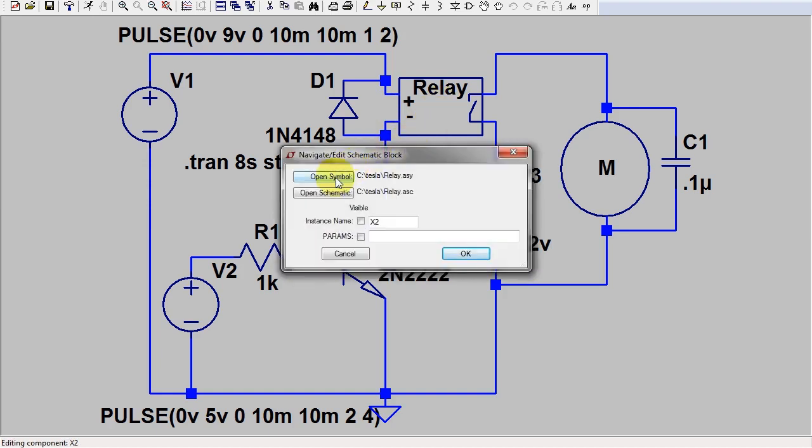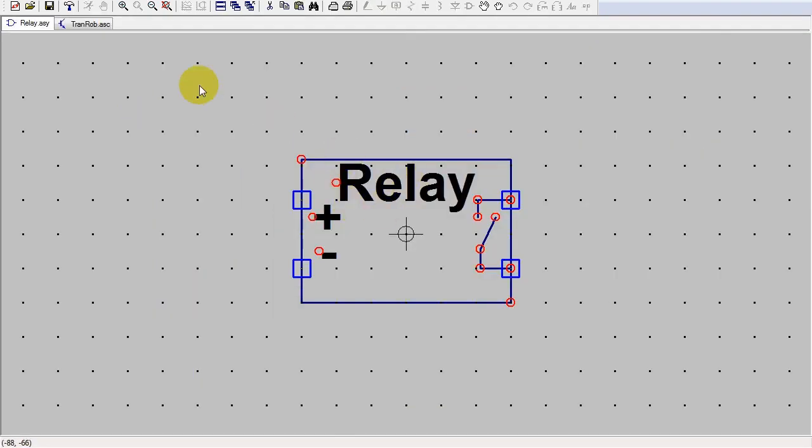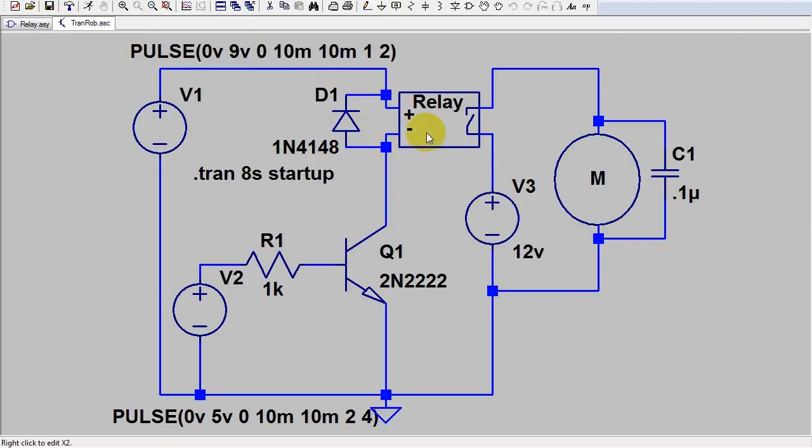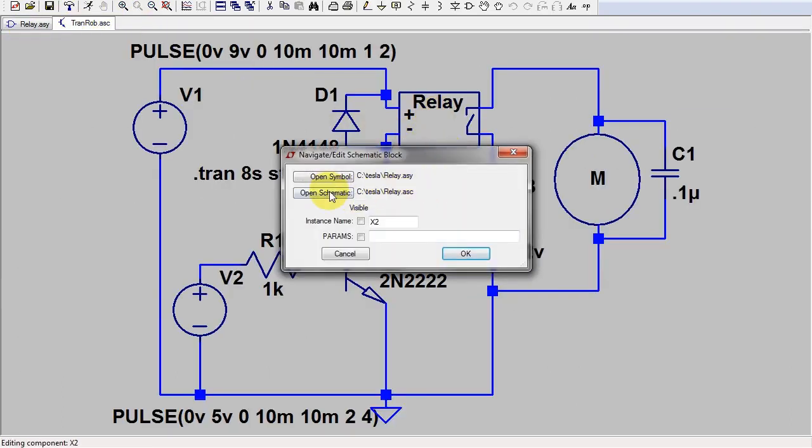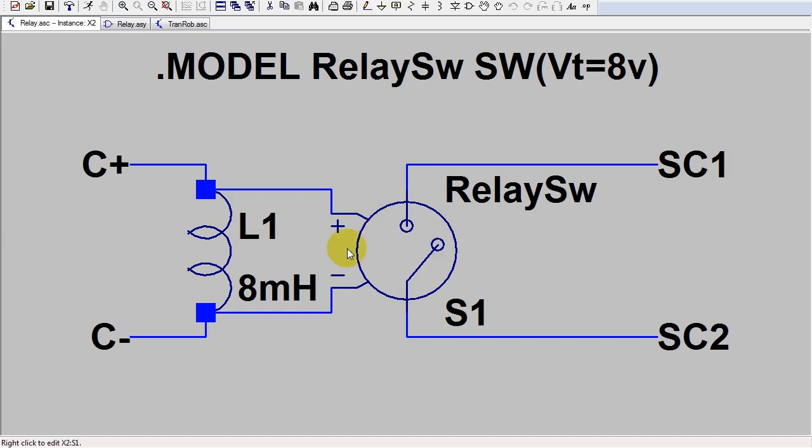In LTSpice, you can create sub-circuits much like you can in Logisim. You can draw the circuit symbol including contacts. Here's the relay sub-circuit. I used a voltage-controlled switch, and to make it somewhat similar to a relay, I put in an inductor.